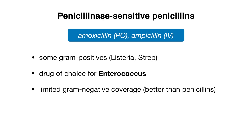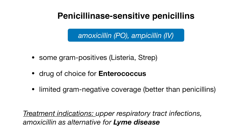Let's move on to our penicillinase-sensitive penicillins. These penicillins are inactivated by penicillinase and so are not great for staphylococcal coverage. They include amoxicillin and ampicillin — make sure to keep the route of administration in mind. They cover some gram-positives like listeria and strep, but are more the drug of choice for enterococcal infections. They also have some limited gram-negative coverage. Clinically, they are used for upper respiratory tract infections like sinusitis and otitis media. Notably, amoxicillin can be used as an alternative for Lyme disease if the patient has an allergy to first-line doxycycline.